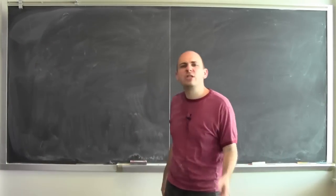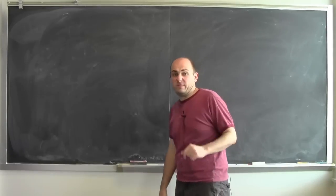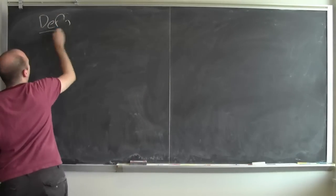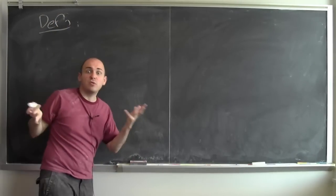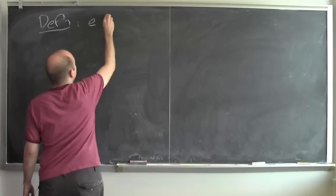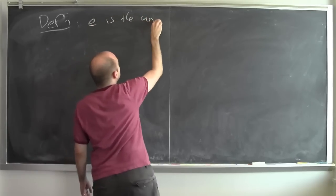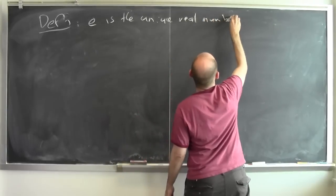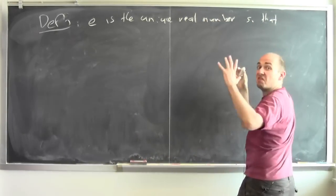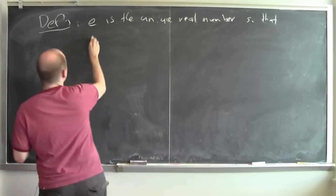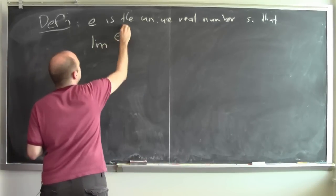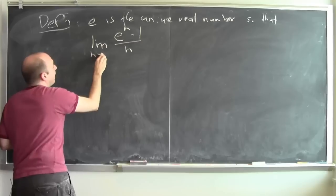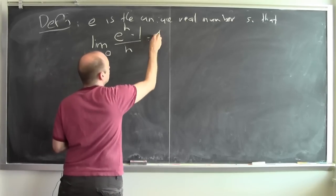I'm going to try to convince you that the function e to the x is its own derivative. First we have to remember the definition — what is this mysterious number e? e is the unique real number so that the following statement is true: the limit of e to the h minus 1 over h, as h goes to 0, is equal to 1.